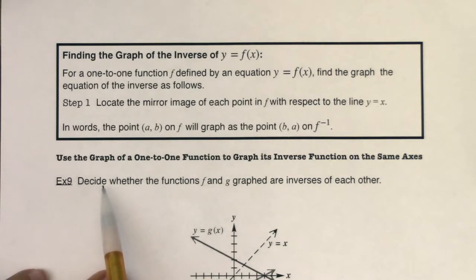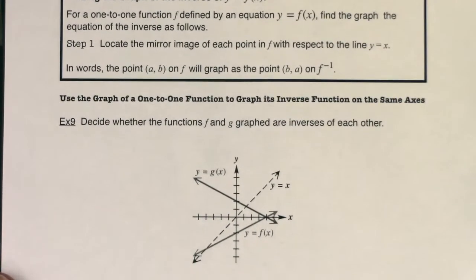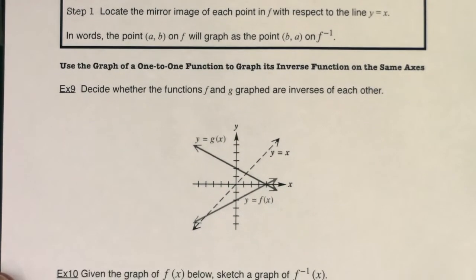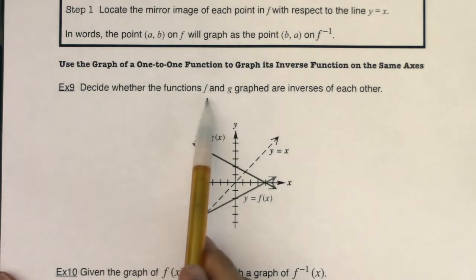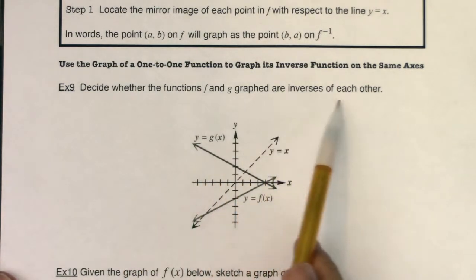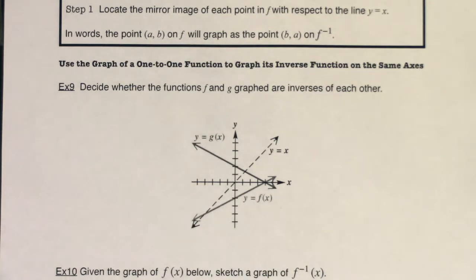So here we go, it says in example nine, oops, let me scooch this up so we can see it. Alright, so it's saying here, decide whether the functions f and g graphed are inverses of each other. So this is either going to be a yes or no answer. Yes, they're inverses or no, they are not.